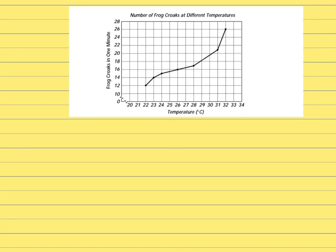If the temperature is high, can you expect a lot of croaks? Yes, because according to this study, that's what the data suggests. Now, if you want to look for more specific information: at which temperature are the frogs going to croak the least? You're looking for the minimum point. The number of croaks is the dependent variable, so you start all the way on the left, because that's when you have the fewest croaks, and then you go down to find the independent variable — the temperature at which they croak the least.